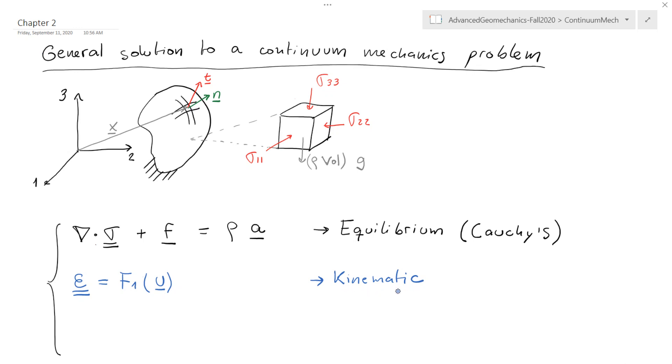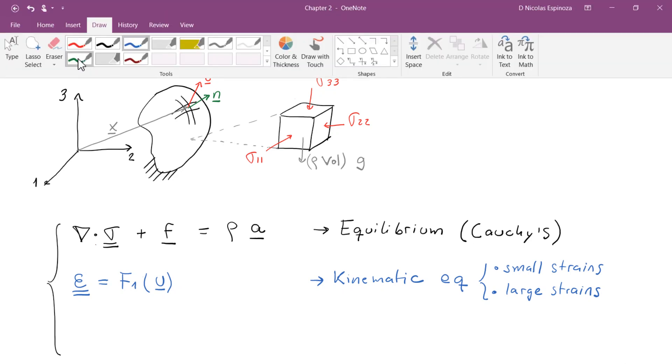Kinematic comes from the Greek word for movement, so basically here we're trying to relate movement to strains. We're going to see basically two types of kinematic equations: one is the kinematic equations for infinitesimally small strains, which we're going to develop in detail, but you could also solve these problems with the theory of larger strains. For most problems in rock mechanics you can get by using small strains; however, some problems like the evolution of salt diapirs over geological time require the use of large strains.